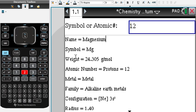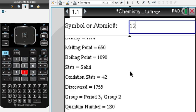You have everything. Again, you have the symbol, weight, atomic number, metal, family. You have everything.